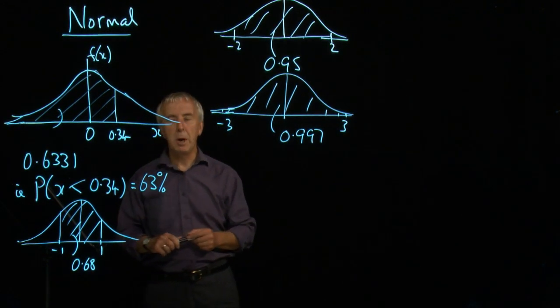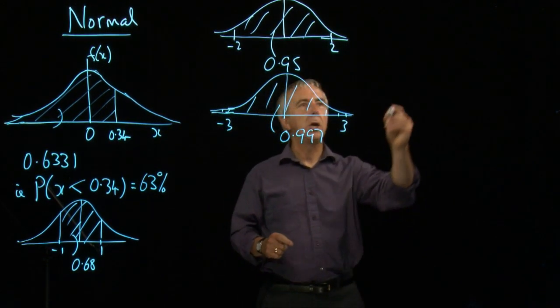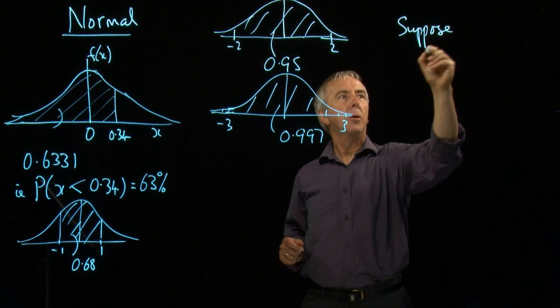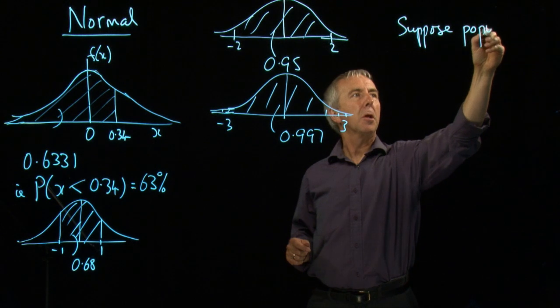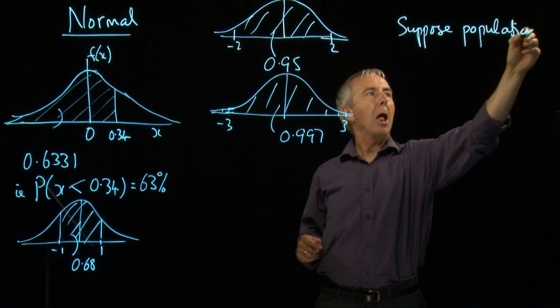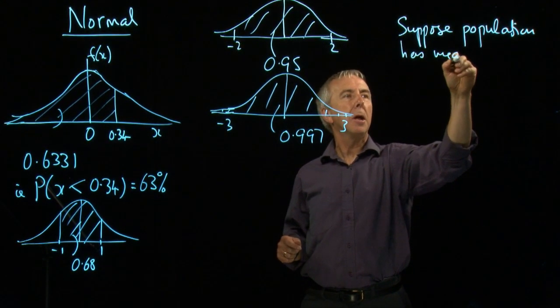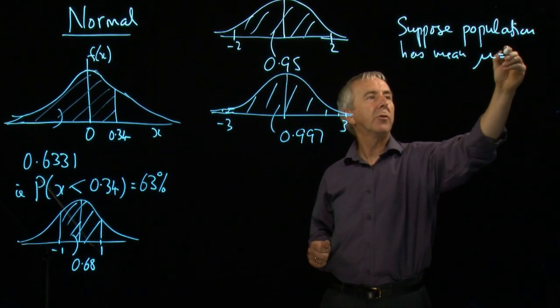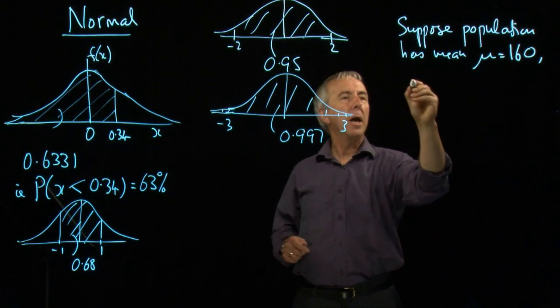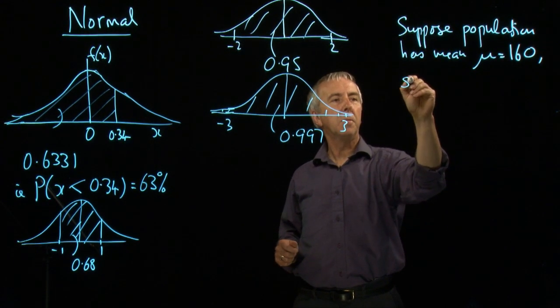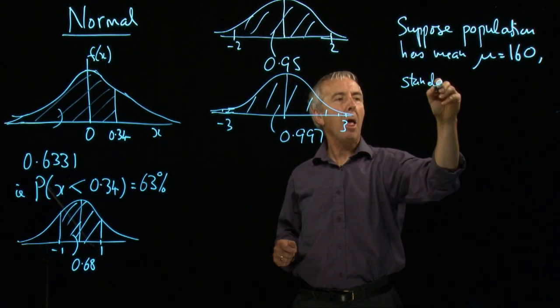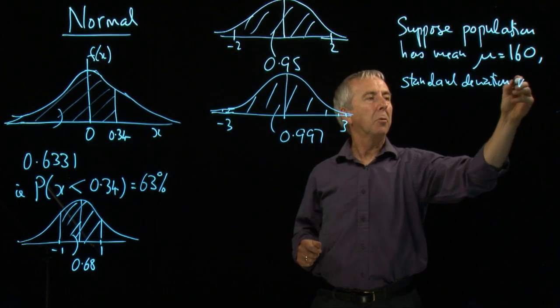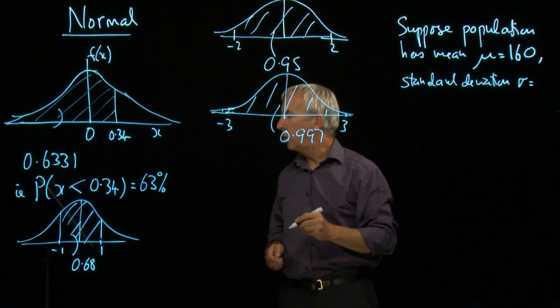And we do that in the following way. Suppose we have a population. Suppose a population has a mean, mu, equal to, let's say, 160. And the standard deviation, which is usually labelled Greek letter sigma, and we'll say 20.